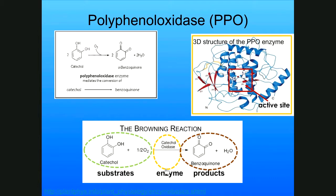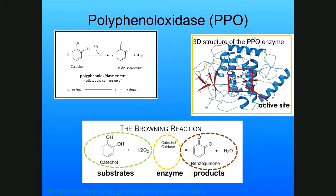To clarify the roles: catechol is the substrate, oxygen is also a substrate needed in the reaction, catechol oxidase is the enzyme, and benzoquinone is the product. On the right-hand side is the active 3D structure of the polyphenol oxidase enzyme. The small square region is the active site — this is where the catechol fits in perfectly and where oxygen also binds. The rest of the protein is only there to maintain that 3D structure. Even if a protein is huge, the active site may be just a tiny part of it.